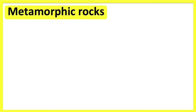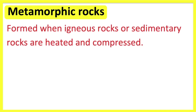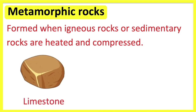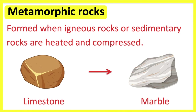Metamorphic rocks are formed when igneous or sedimentary rocks are heated at a high temperature and then compressed under great pressure. The high temperature and pressure causes the rocks to change into other types of rocks. This process takes a very long time. An example of a metamorphic rock is marble. Marble originates from limestone.